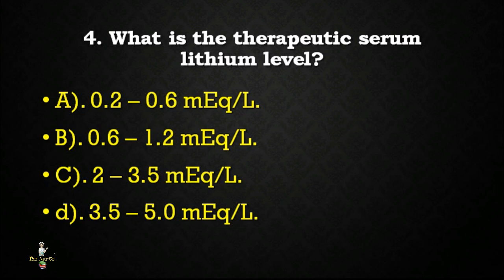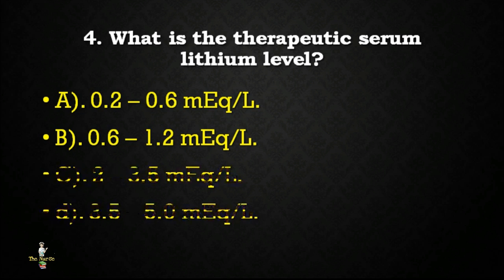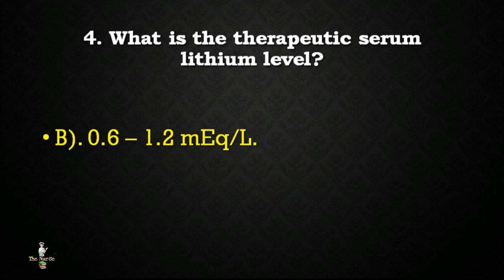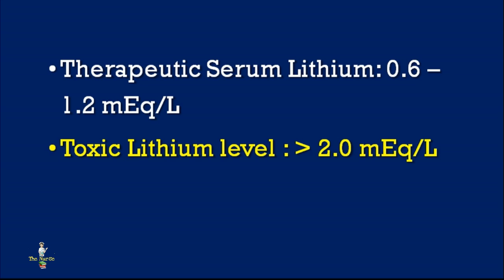Next question: what is the therapeutic serum lithium level? Options: 0.6 to 1.2 mEq/L, 2 to 3.5 mEq/L, or 3.5 to 5 mEq/L? Correct answer is 0.6 to 1.2 milliequivalents per litre. The toxic lithium level is more than 2 milliequivalents per litre.